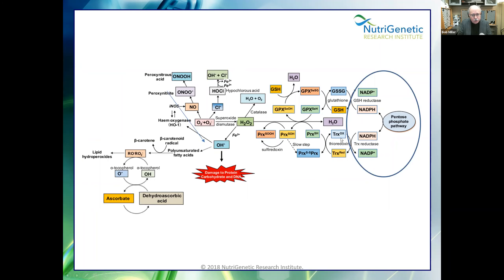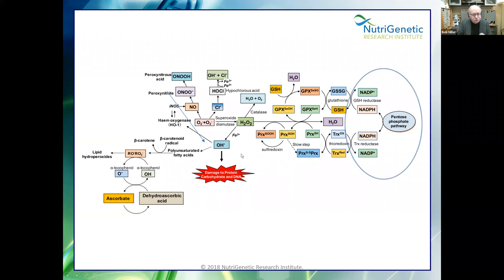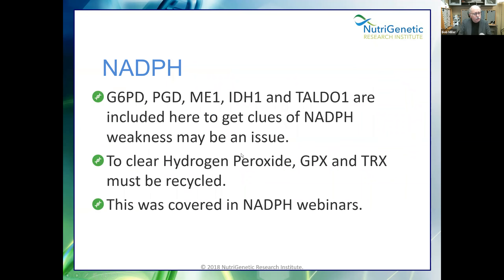This 3D chess game involves NADPH production, glutathione production, thioredoxin production, catalase production, perhaps overproduction of superoxide, and too much or unregulated iron — multiple factors. That's why hydrogen water is one of my favorites, because it'll slow this process down: H⁻ + H⁺ equals H₂O. NADPH is needed; glutathione peroxidase and thioredoxin are needed to clear hydrogen peroxide. This was covered in the NADPH webinars — please go back and listen to those.